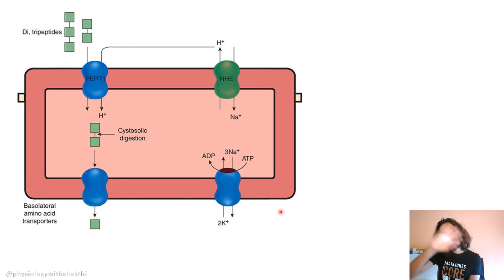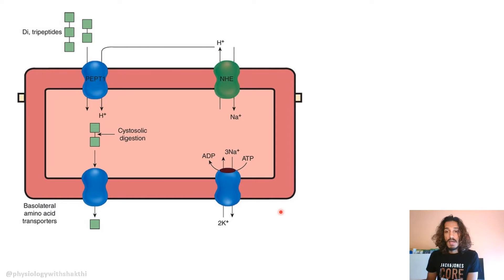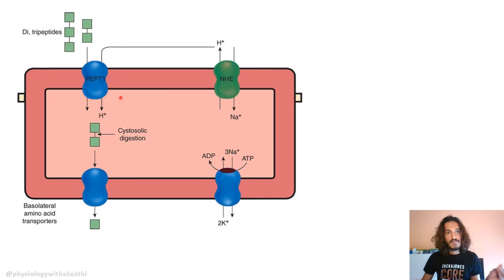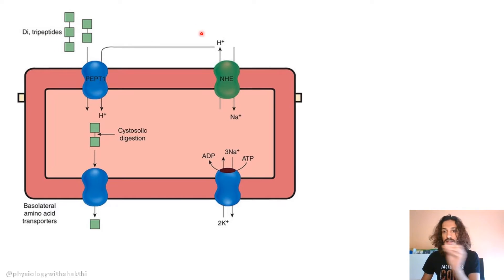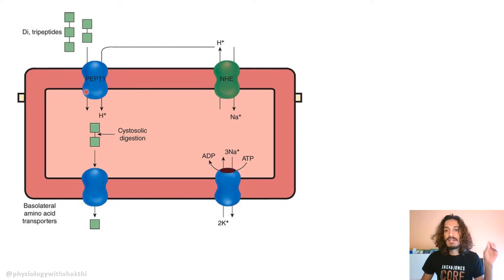For absorption of amino acids in the intestine, after breakdown, a co-transport system is used — sodium along with the amino acid. This is a secondary active type of transport. However, if there is a problem with this, there are other ways amino acids can be taken in. Even before full digestion to amino acids, di- and tripeptides can be transported via the peptide-1 transporter, PEPT1.